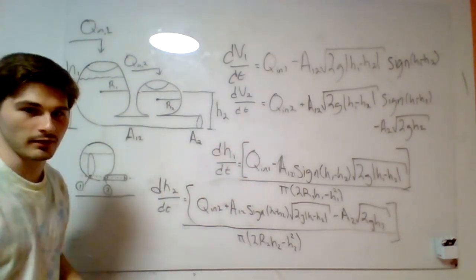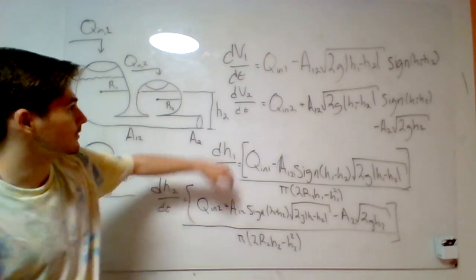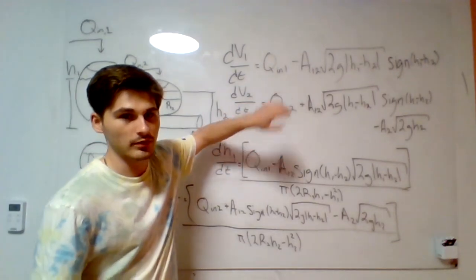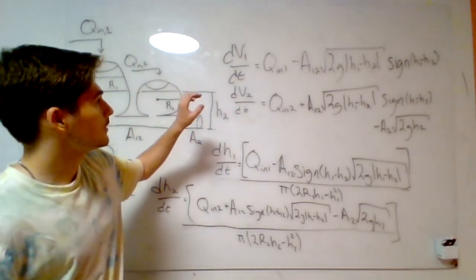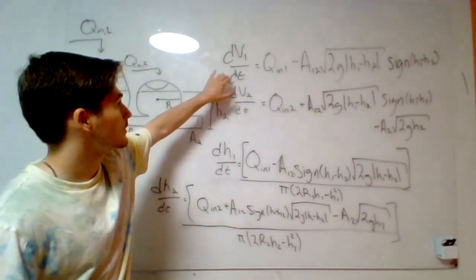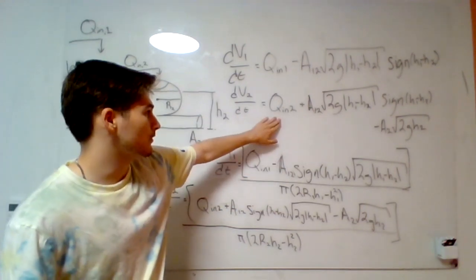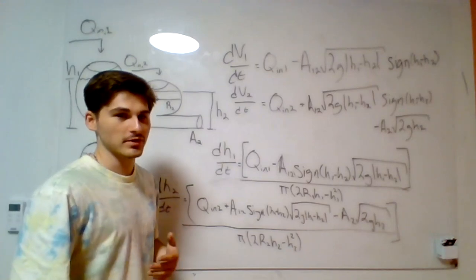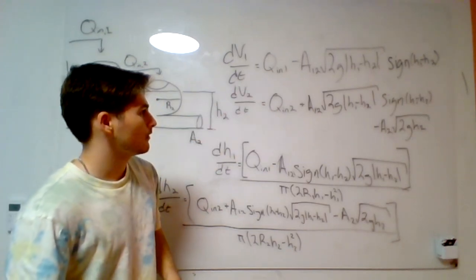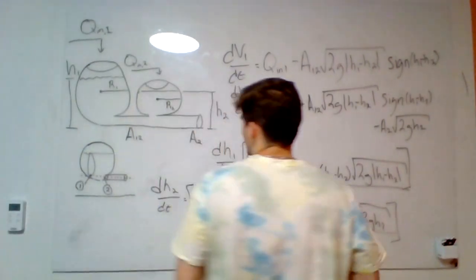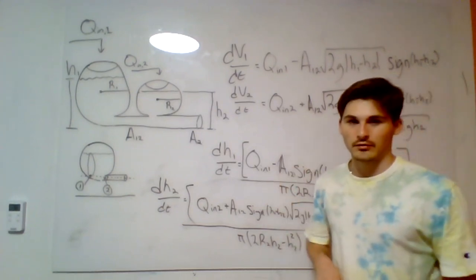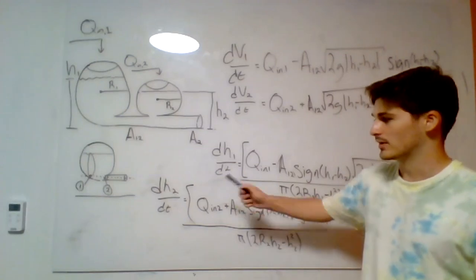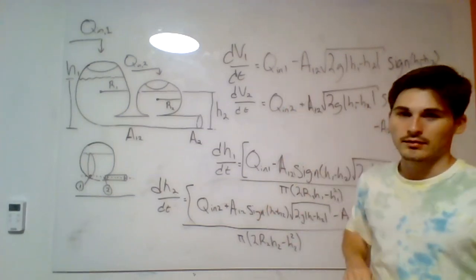We now have equations for how the height and volume of liquid in each tank change with time. To find the inlet flow rates Q_in1 and Q_in2, we set the dV/dt equations equal to zero at steady state — the only unknown is the inlet flow. In the next video, I'll model this in Google Colaboratory using numerical values to find numerical results for dh/dt, dV/dt, and the inlet flows.